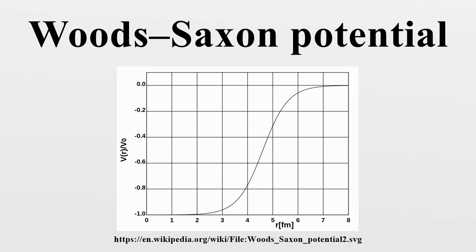The form of the potential, as a function of the distance R from the center of the nucleus, is given by the formula, where V0 represents the potential well depth, A is a length representing the surface thickness of the nucleus, and R is the nuclear radius where R0 equals 1.25 fm and A is the mass number.